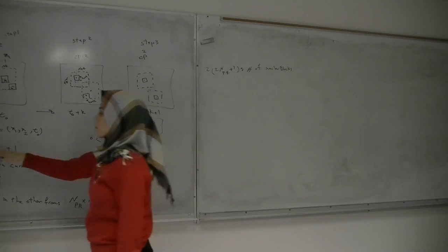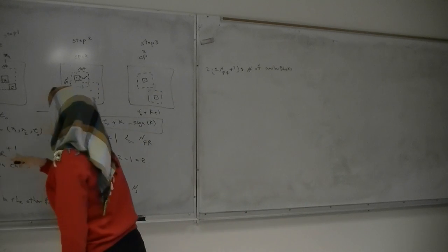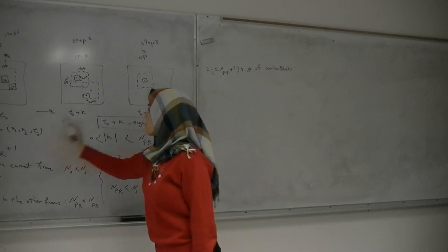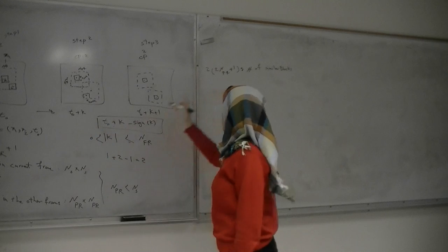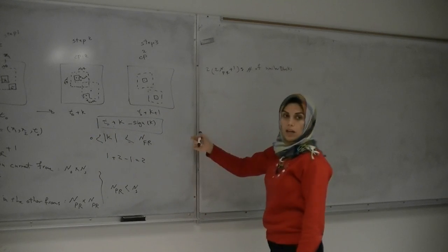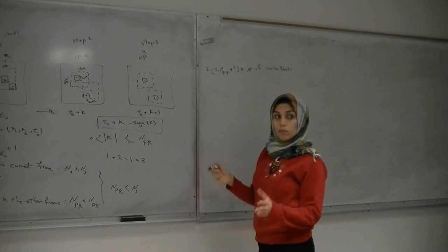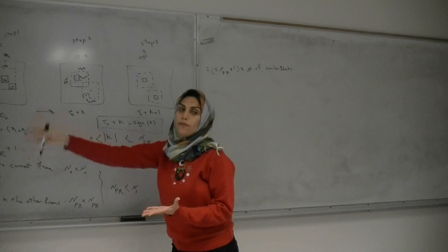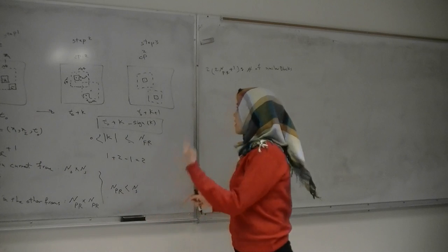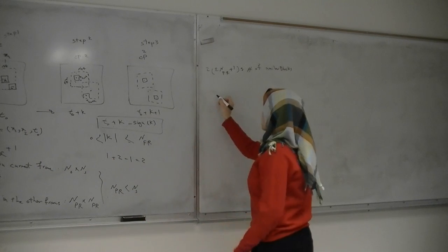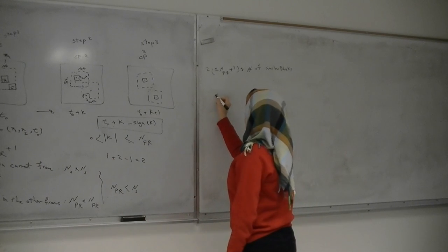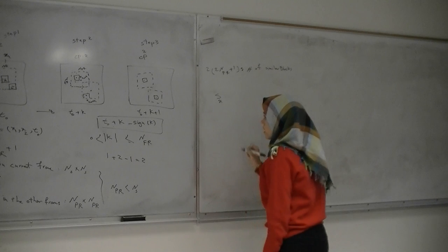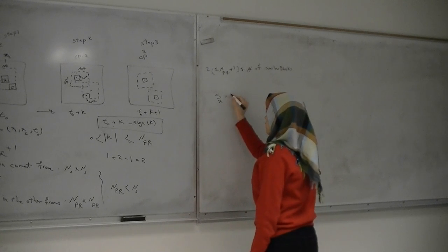For example, if NFR gives five frames, we have ten similar - ten most similar blocks in the other frames. In the next step, we call the full collection SX.